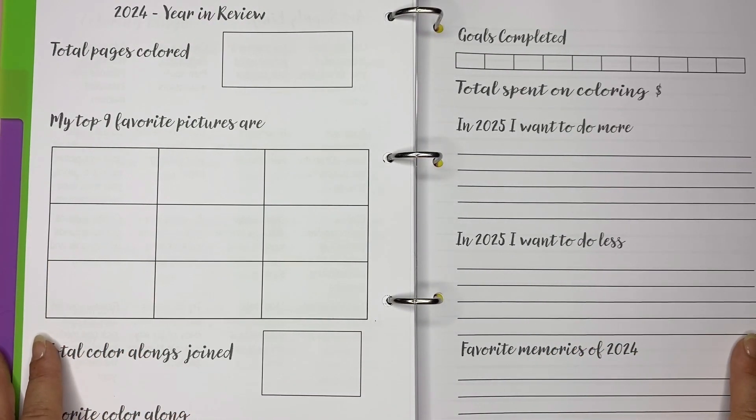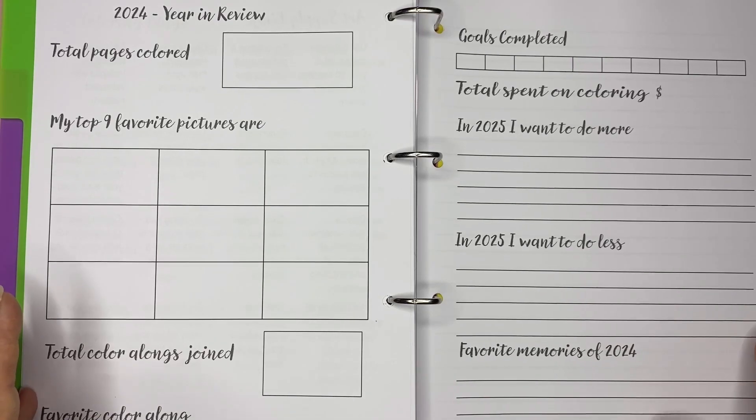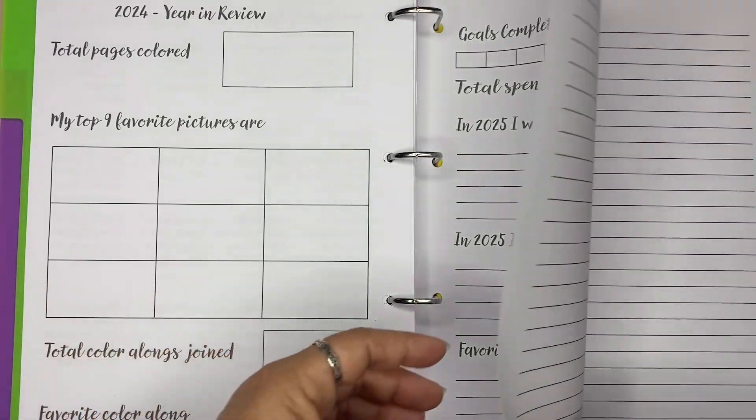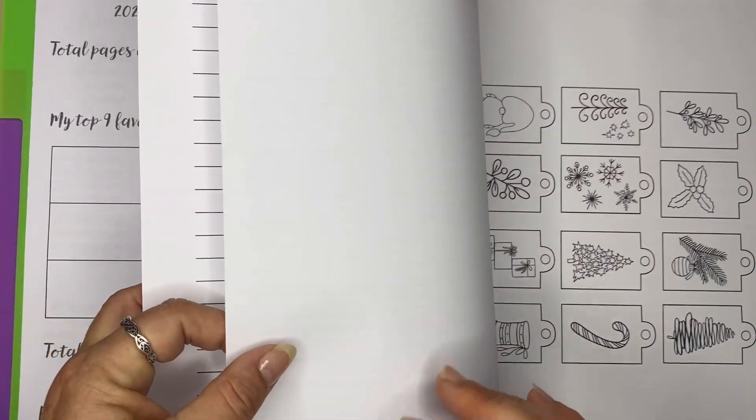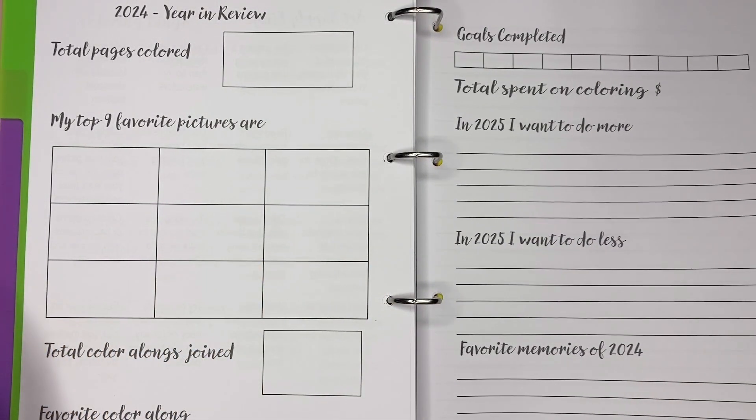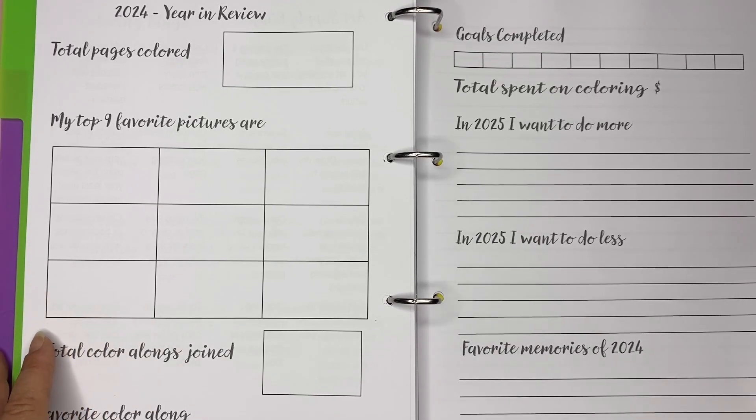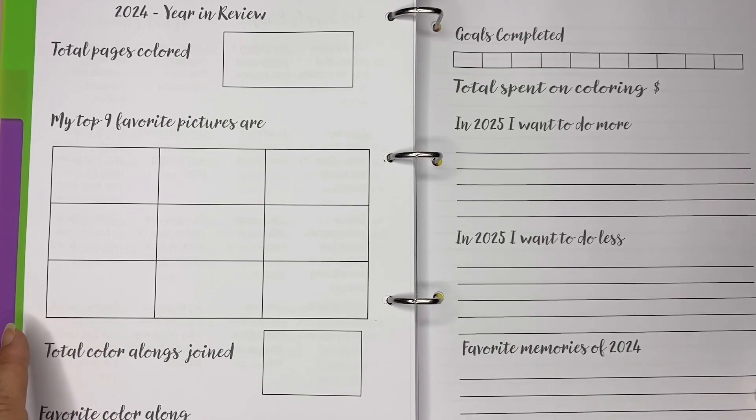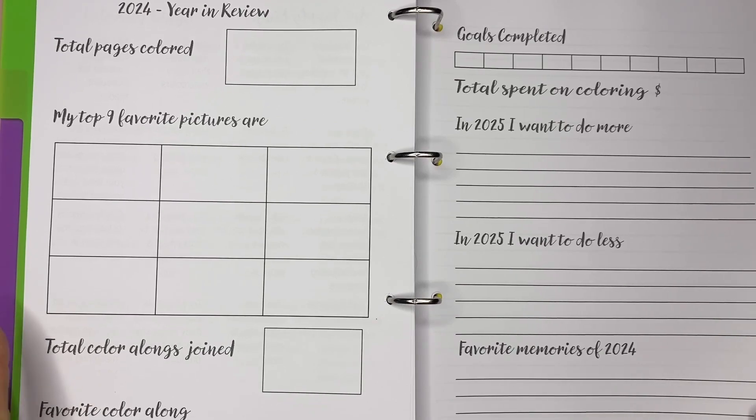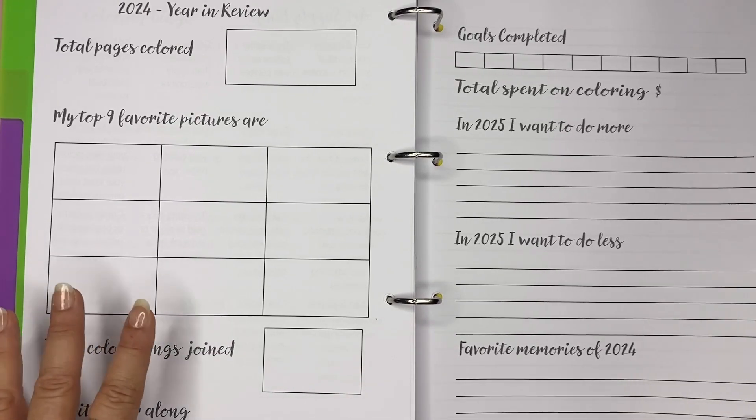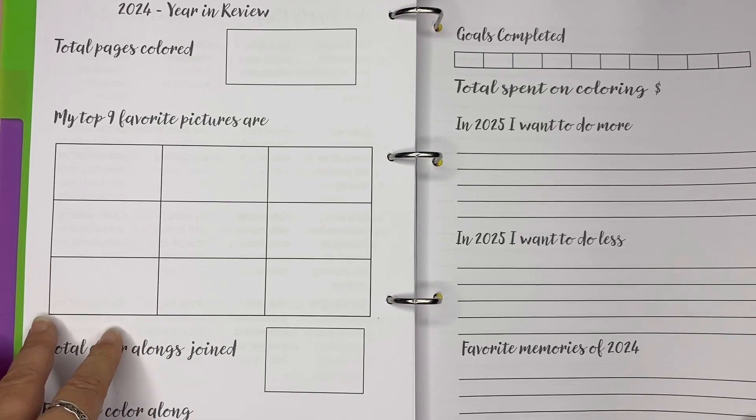And of course, at the end of the year, just a review. Now, I know it's a bit late in the day. And some of you may already have planners. So I've also got an undated version of this again on letter paper. But if people would like it in A5, I can do that as well. Just let me know.